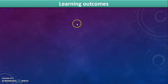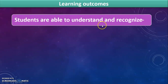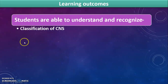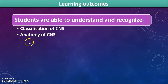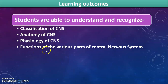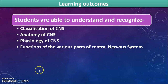The learning outcomes of today's session are: students should be able to understand and recognize the classification of the central nervous system, anatomy of the central nervous system, physiology of the central nervous system, and functions of the various parts of the central nervous system. Let's start our session and discuss all the points one by one.